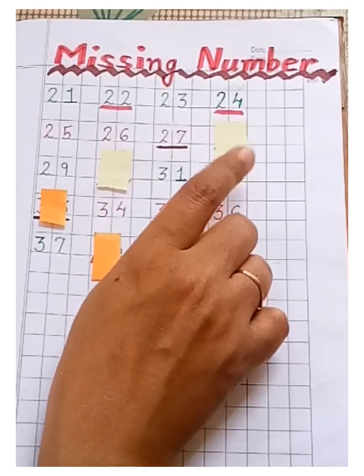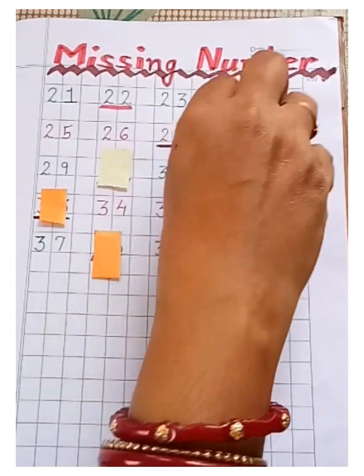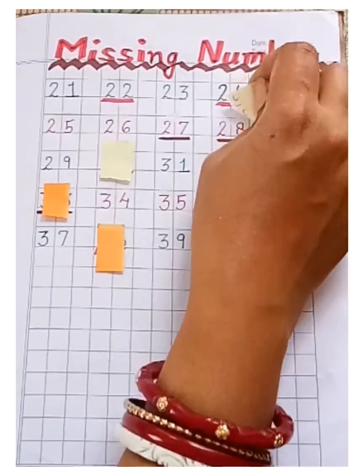Then what comes after 27? Very good. It's 28.